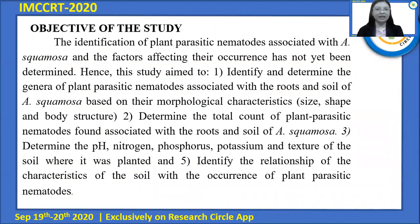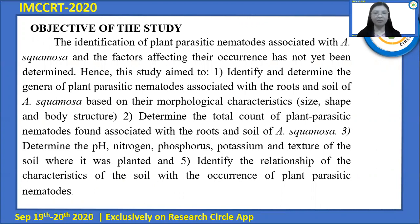For the objective of this study, the identification of plant parasitic nematodes associated with Anona Squamosa and the factors affecting their occurrence has not yet been determined. Hence, this study aimed to identify and determine the genera of plant parasitic nematodes associated with the roots and soil of Anona Squamosa based on their morphological characteristics.